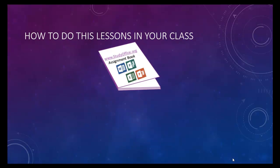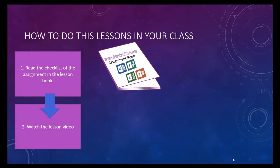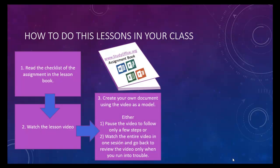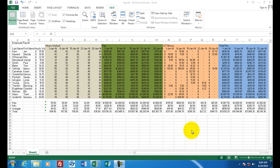There is an assignment book that accompanies every video. Each page in the assignment book has a checklist of the things that you should accomplish in each lesson. Watch the video lesson to see how things are done. After you create your own document using the video as a model, you may have some modifications such as your own business names or your own paragraphs or your own data, but it'll look very similar. You can either watch the whole video through at one time or pause it as you go. Finally, print the document and your classroom teacher will grade it.